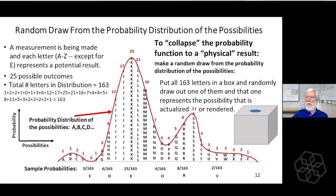That's what's happening when you get a physical result at a measurement. In the double slit experiment, measuring on the screen — where will it hit? There are all these different places it could land. It goes into that distribution, makes a random draw, gets something, and that's where it places the dot on the screen. The screen makes the measurement when the dot hits it, because it leaves a trace of where it hit.